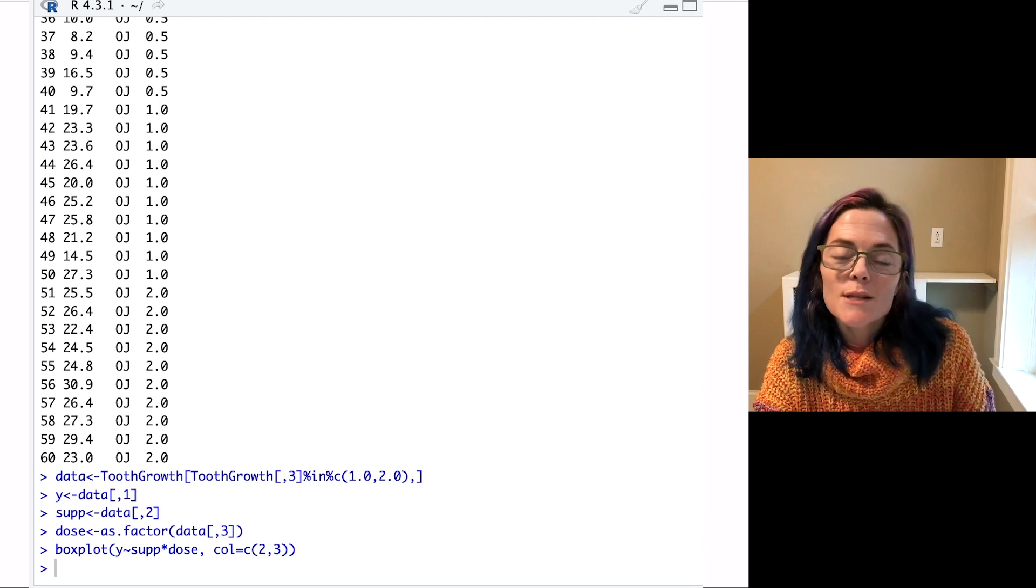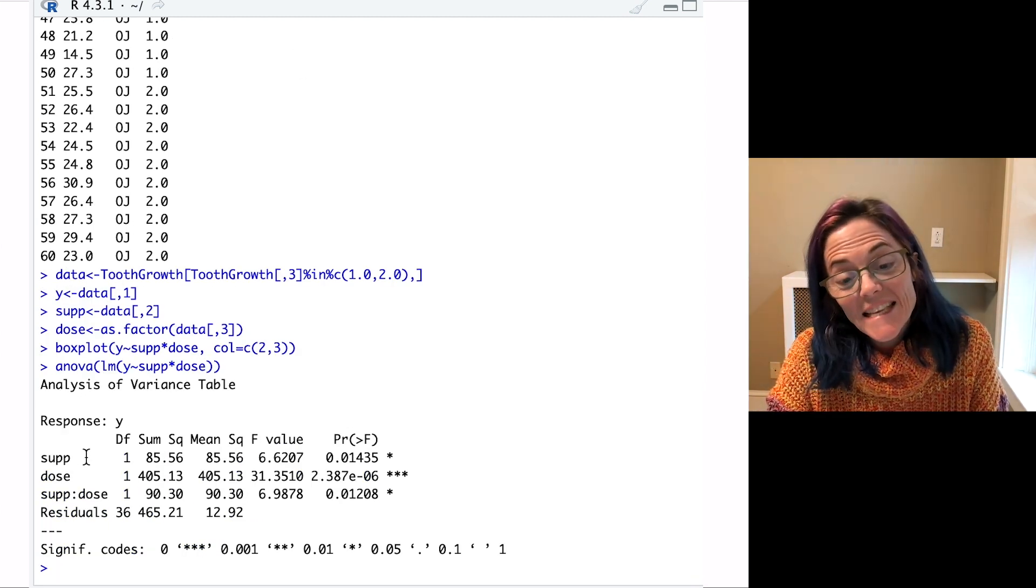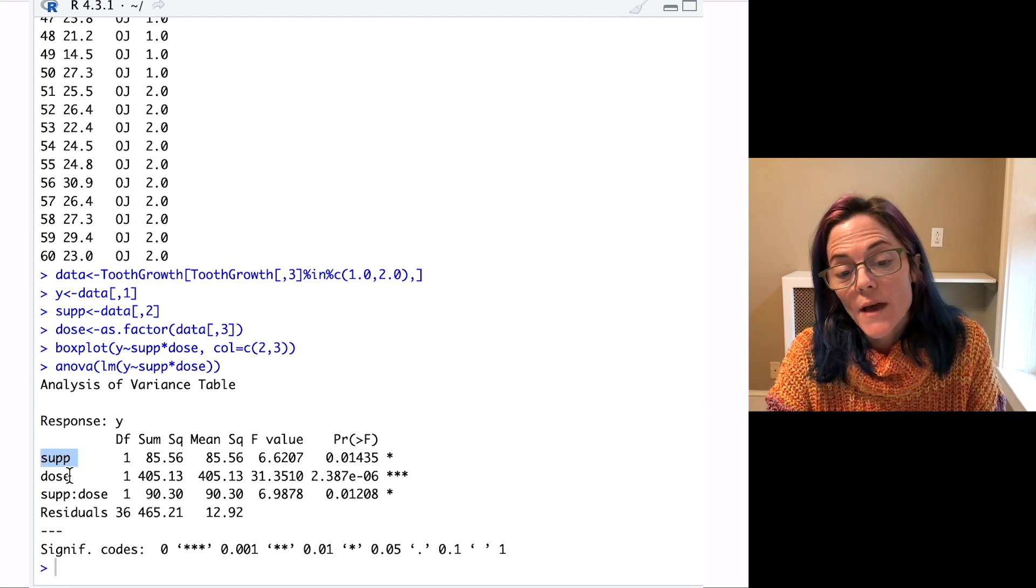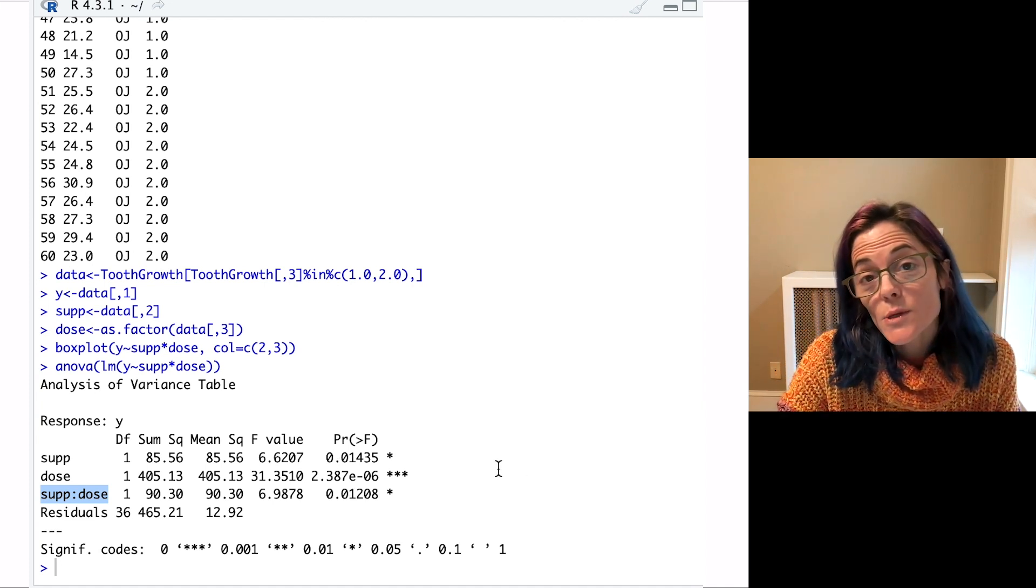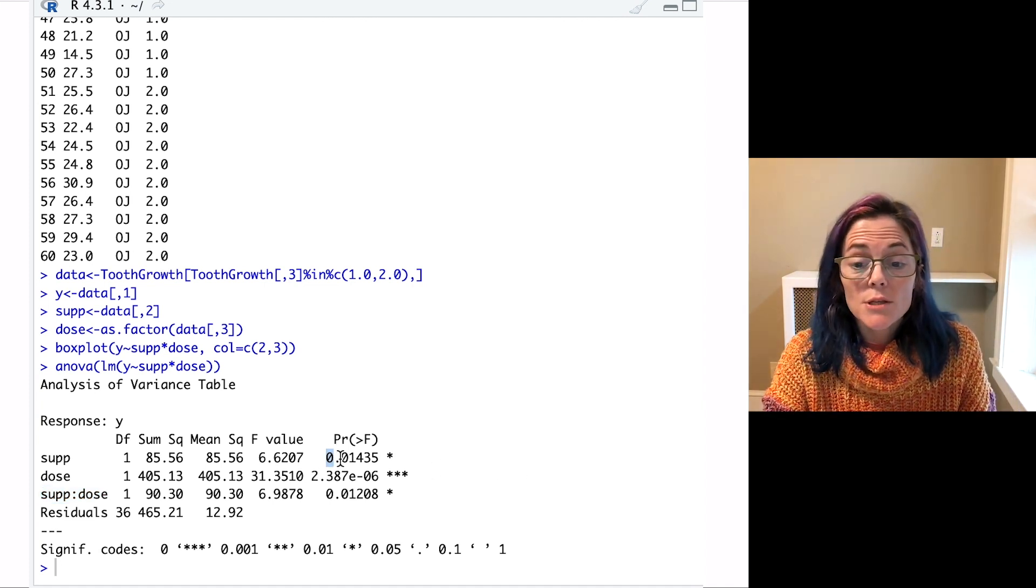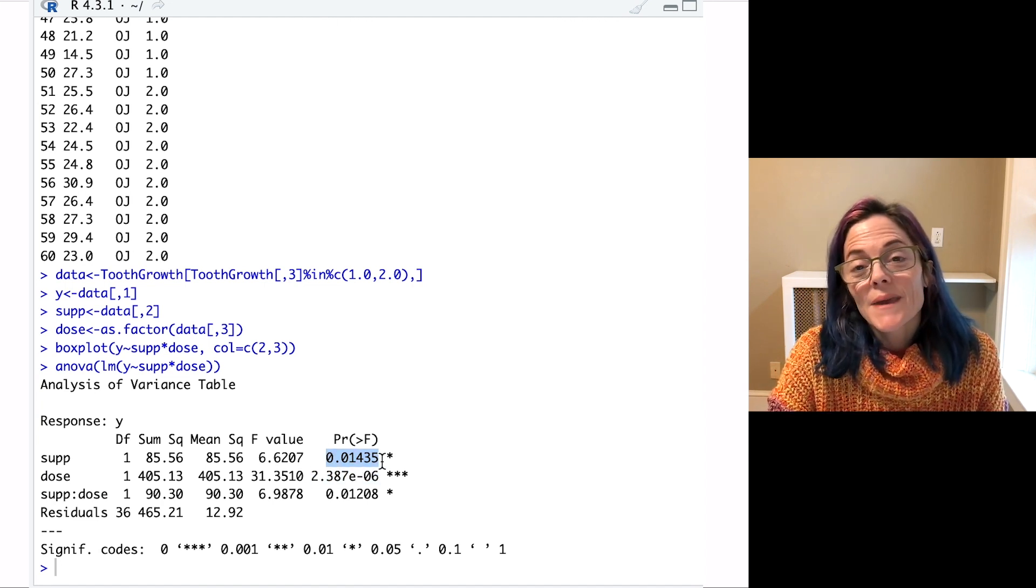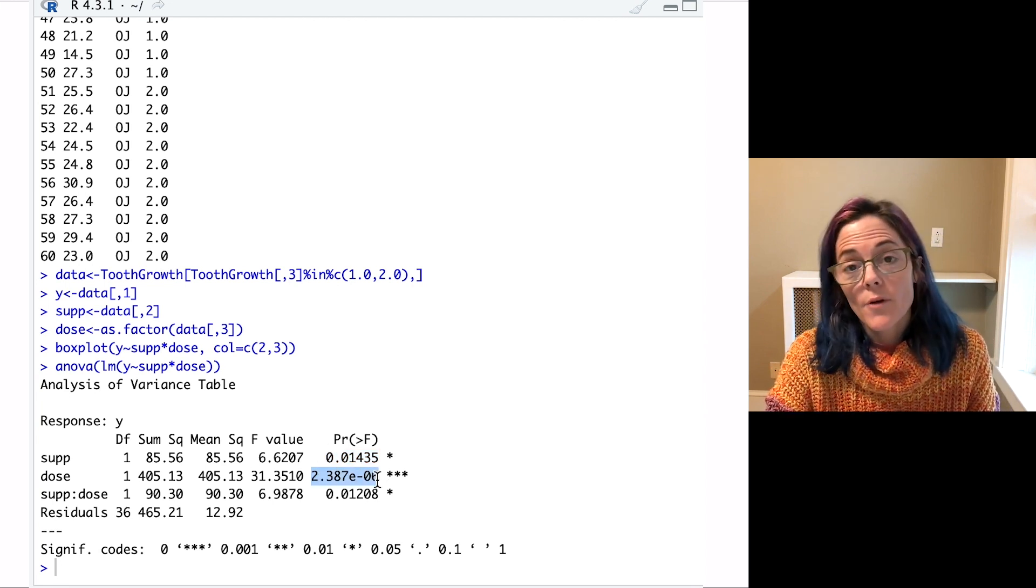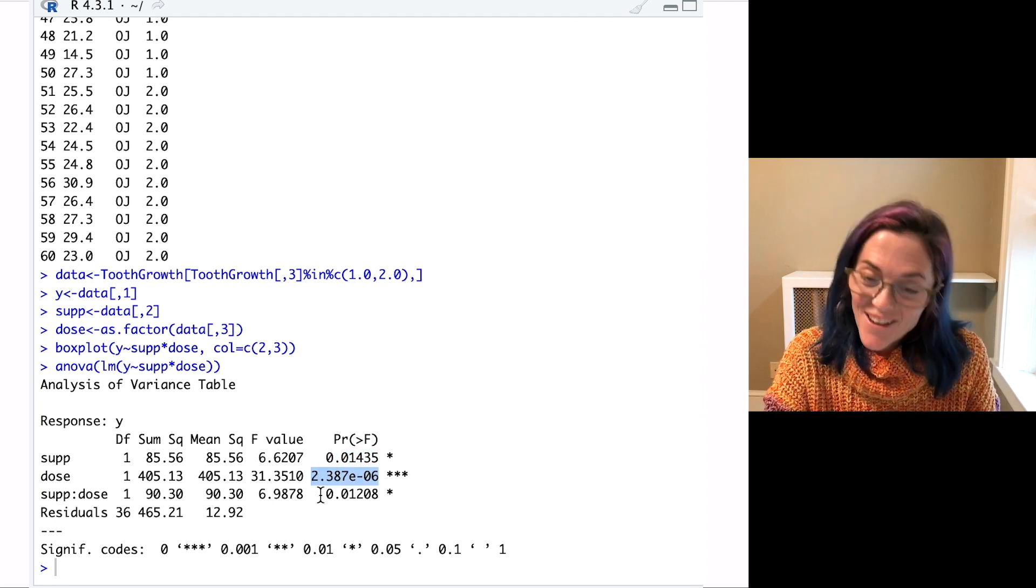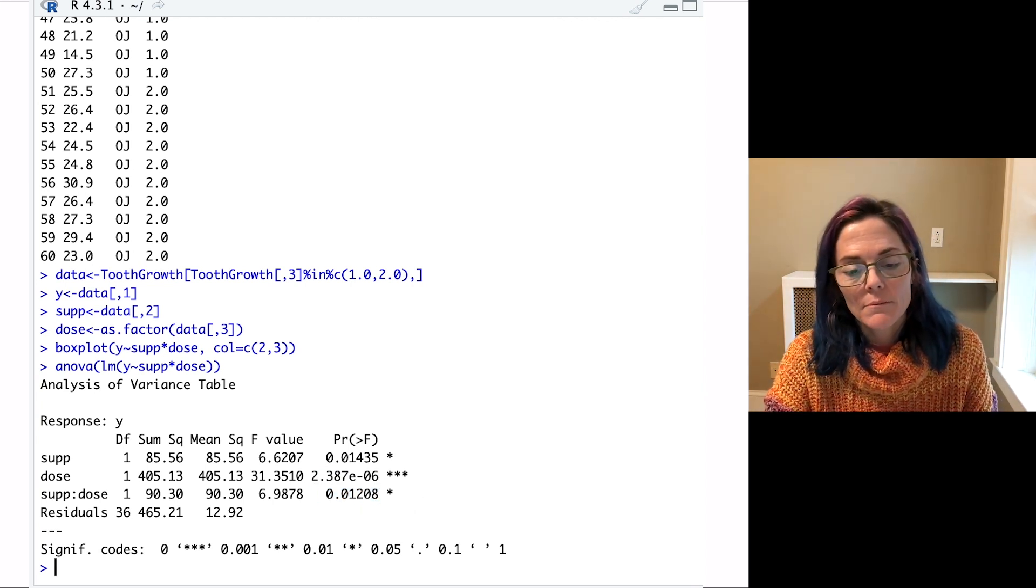Now we are back here. So let's run the full ANOVA, which has the interaction term. You see, looking at this table, we have a row for the first factor, a row for the second factor, and then a row for the interaction. Well, at least at the α equals 0.05 level, all three of these are statistically significant. There is an effect on group means coming from the supplement type. There is an effect on group means coming from the dose. And there is an interaction between supplement type and dose.